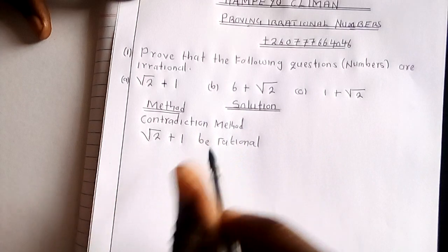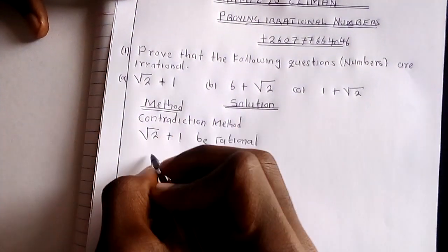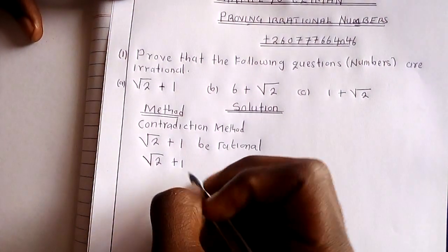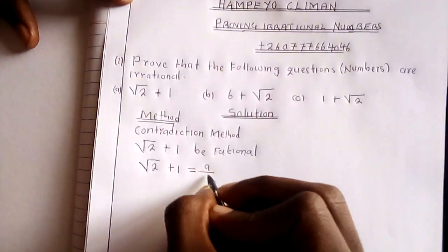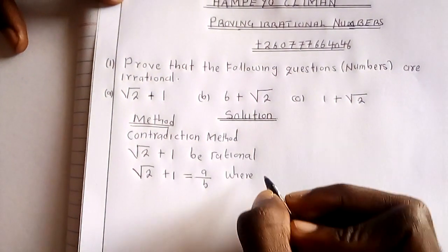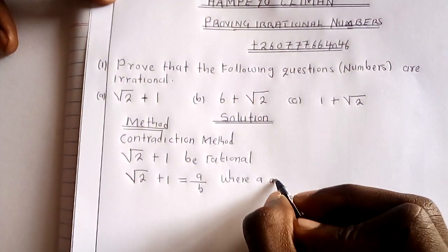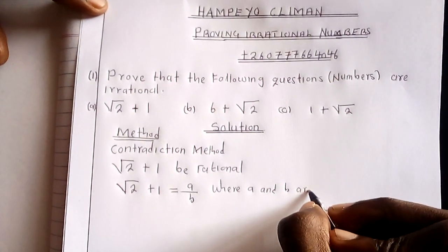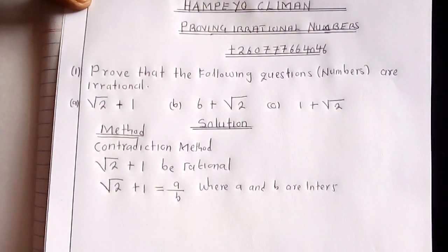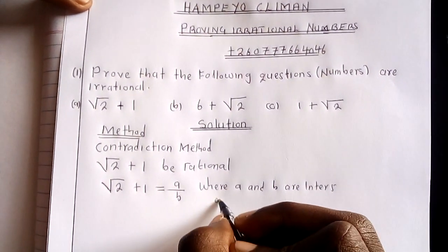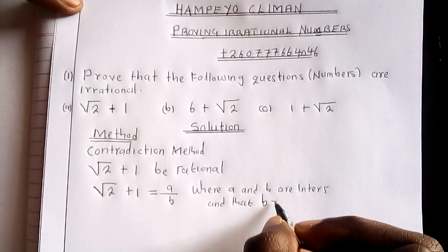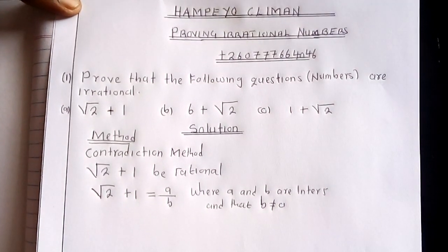Then we know that if this is rational, then what we are simply saying is that the root of 2 plus 1 is going to equal A over B, where A and B are integers, and that B must not equal 0.